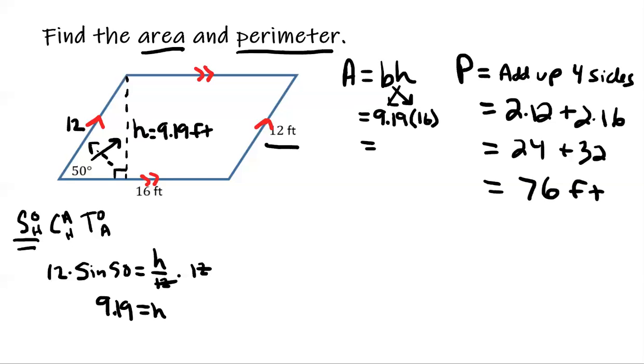Sorry about that. 16 times 9.19 or 16 times 9.19, it's going to give you the same answer. I'm going to times that by 16 and I'm going to get 147.08.